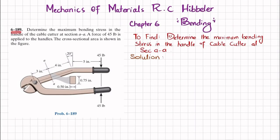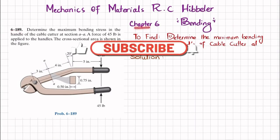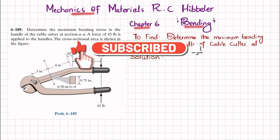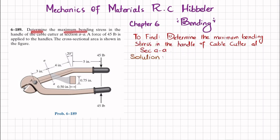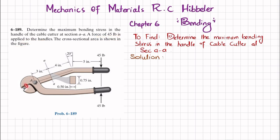Welcome back. Problem 6-189, taken from Chapter 6 on bending in Mechanics of Materials by R.C. Hibbeler. The statement is: determine the maximum bending stress in the handle of a cable cutter at section AA. A force of 45 pounds is applied to the handle. We have to find the maximum bending stress in section AA of the cable cutter.